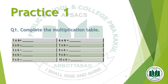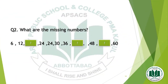You should learn and memorize the table of 6. Practice question 2 related to the table of 6: what are the missing numbers? The sequence is 6, 12, blank, 24, 30, 36, blank, 48, blank, and 60. Fill in the missing values from the table of 6.